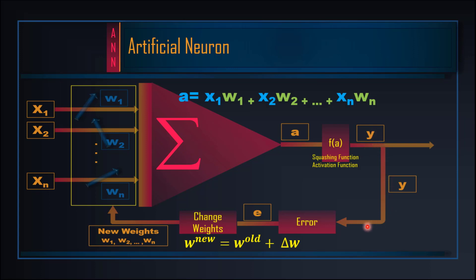Here we have an output wire, and we have to take the error function. The error function depends on how we are doing supervised learning. We have to choose the error function, and the error function gives us the result based on the output.